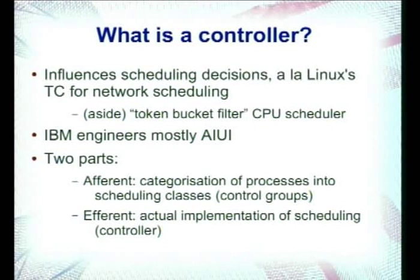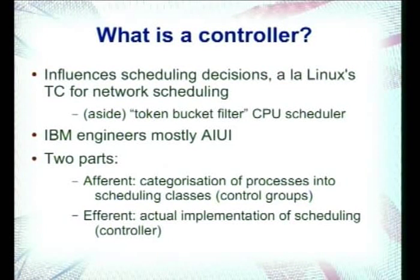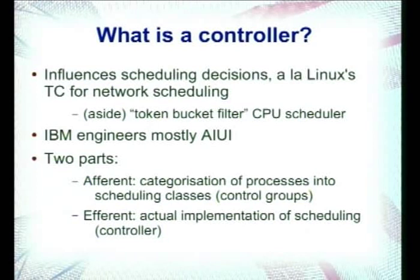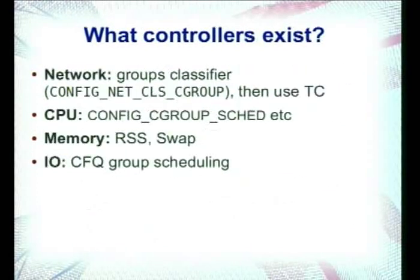A controller is the other side of it - it's basically some kind of scheduler. You have a lot of these in the network stack already with TC. There's one for the CPU, one for I/O, that sort of thing. Most of that work came from IBM. The control groups is the classifying system for a container, effectively, and the part of the code which does the scheduling is called the controller.